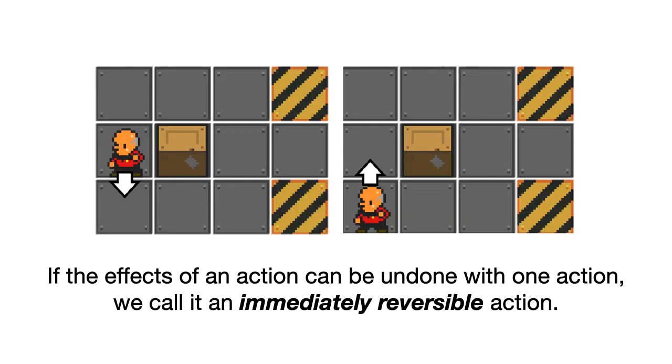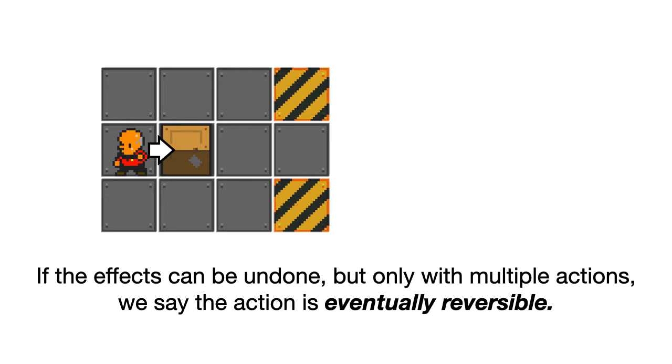So if the effects of an action in the game can be undone immediately with one extra action, we call the action immediately reversible. So in this case, moving down can be immediately reversed by moving up again. It's a very simple action. And in the paper, we obviously go into detail about what it means to undo an action. We talk about state equality, but I'm going to gloss over that for today.